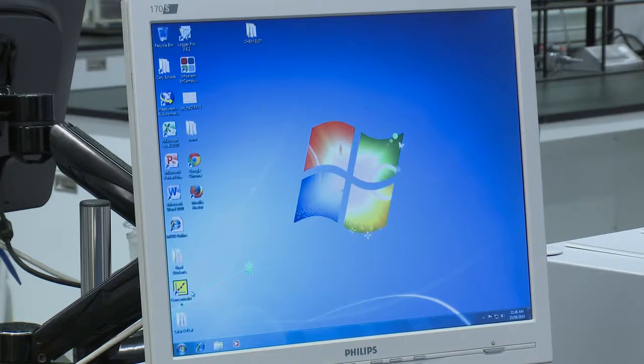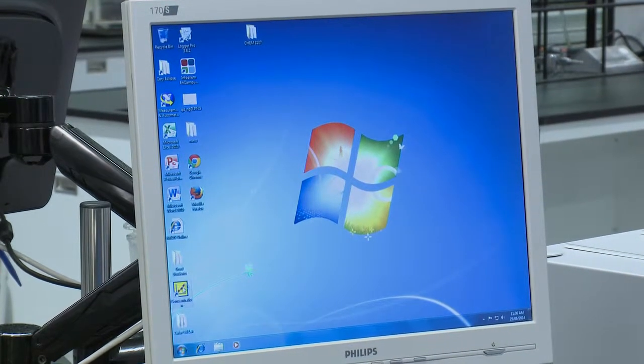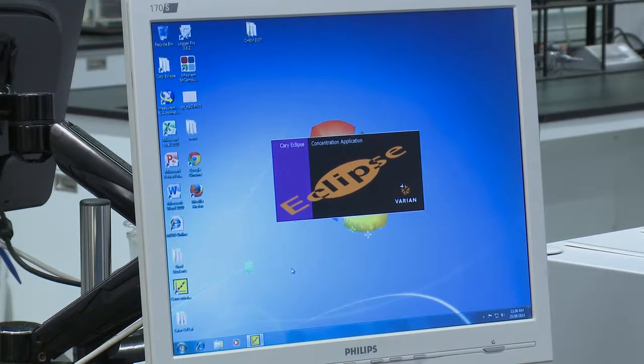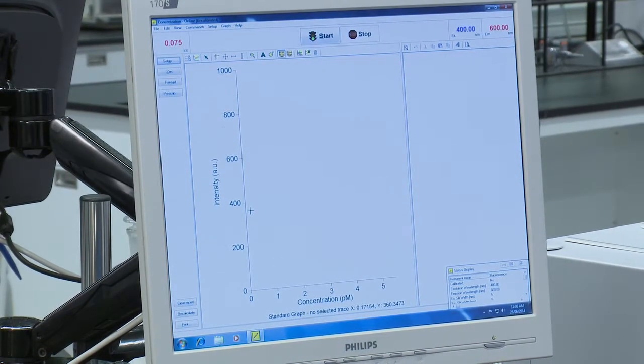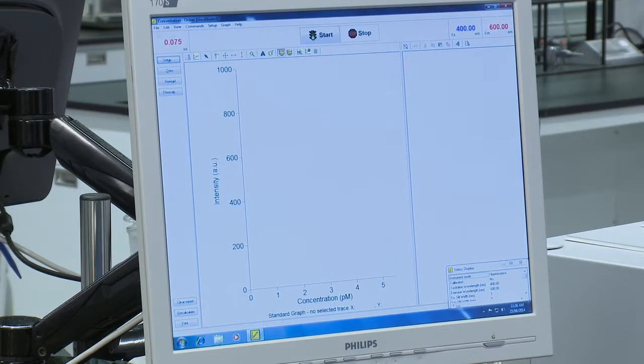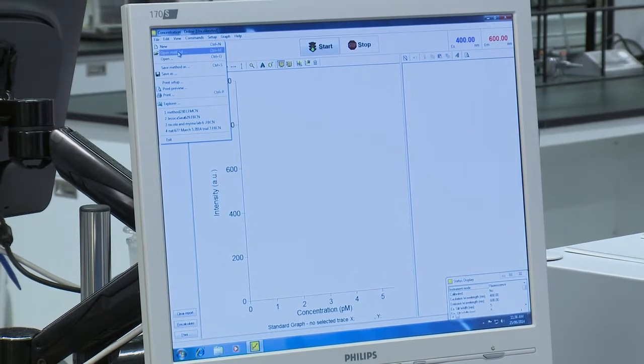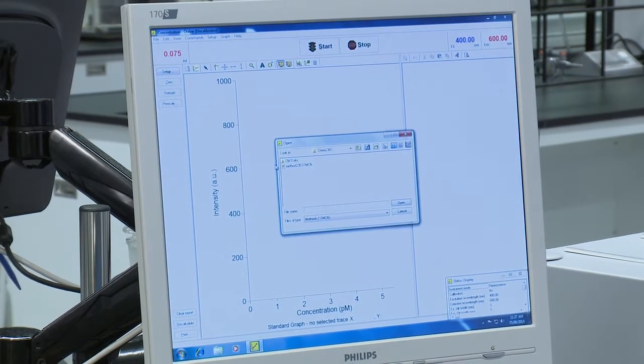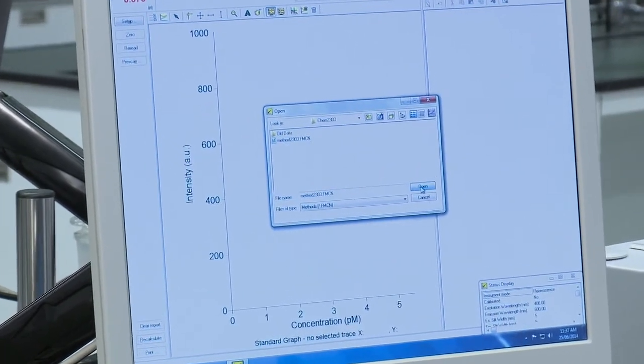On the desktop you'll want to open the icon labeled concentration. Then we need to ensure we have the correct method loaded so we go to file, open method, click on method 2303 and click open.